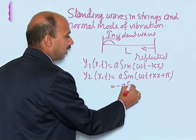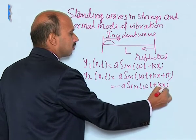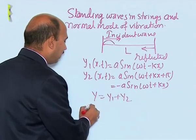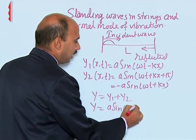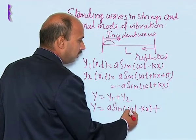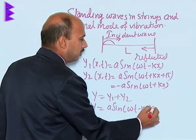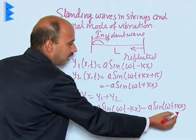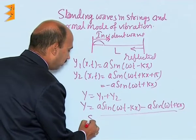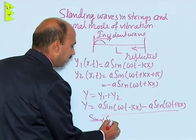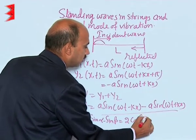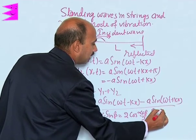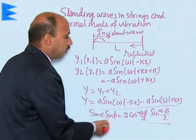So, according to the principle of superposition we can write y = y₁ + y₂, which gives y = a sin(ωt − kx) − a sin(ωt + kx). We can solve this equation by using the formula: sin α − sin β = 2 cos((α + β)/2) sin((α − β)/2). By using this formula, we can solve this.